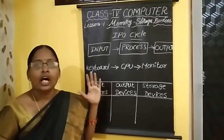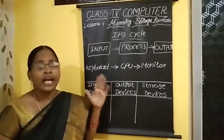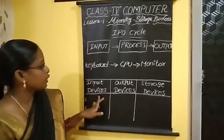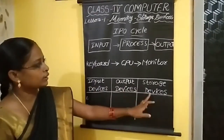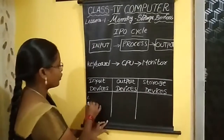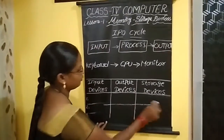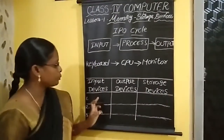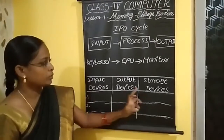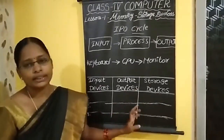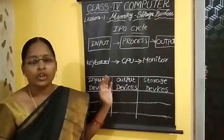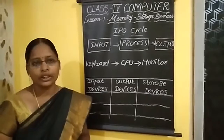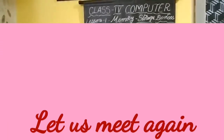Today our activity one is: draw a table like this with three columns — input devices, output devices, and storage devices. You have to write some input device names, output device names, and storage device names. Do it on a paper or a book. I will collect this all after school re-opens. Okay children, take care. Thank you.